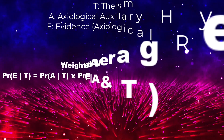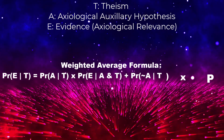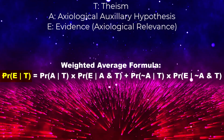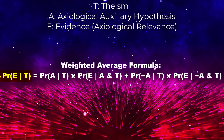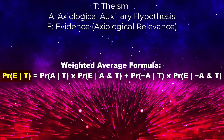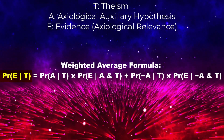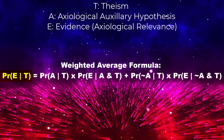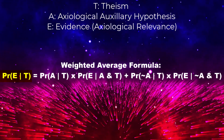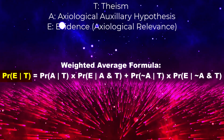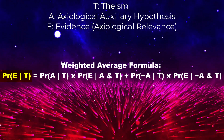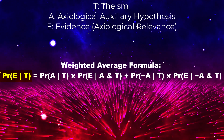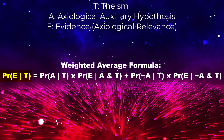Let's break down the weighted average formula. We have P(E|T), which represents the probability of observing a specific evidence E given theism T. This is what we're interested in assessing.